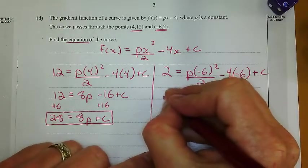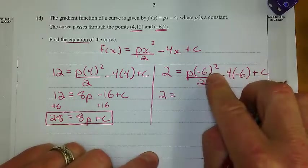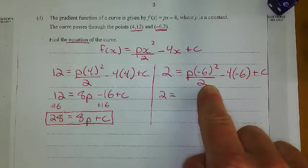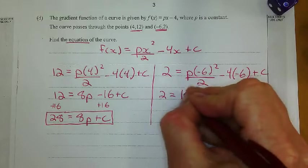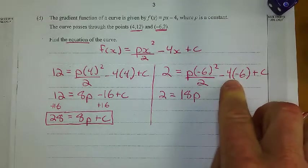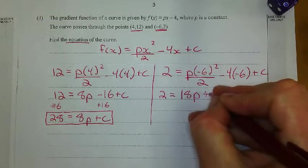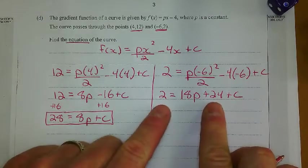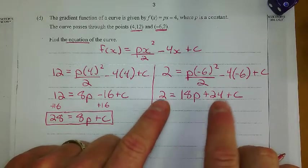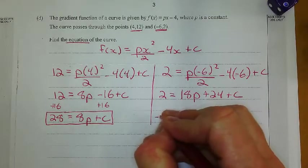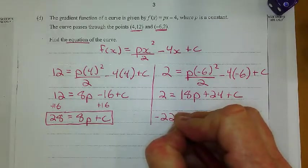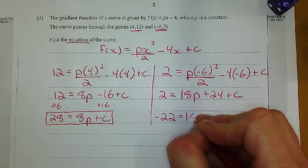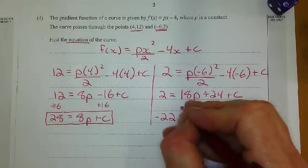Now I simplify, clean this up a bit. Negative 6 squared is 36 divided by 2 gives me 18, so I get 18p. Negative times a negative is a positive, so that's plus 24 plus c. Now I think I'm going to subtract 24 from both sides, and I get negative 22 equals 18p plus c.